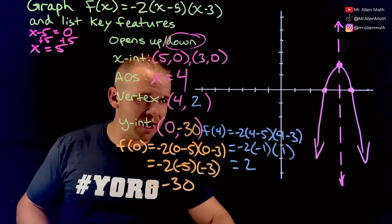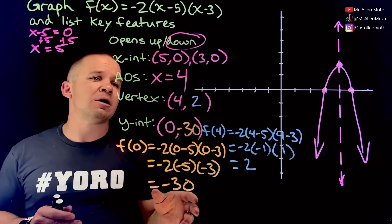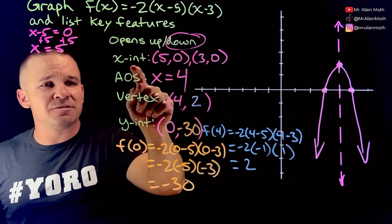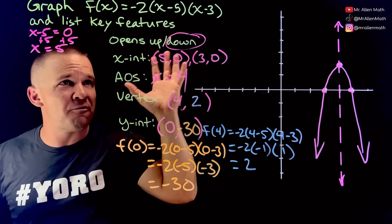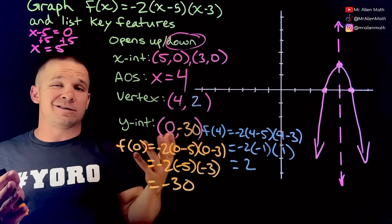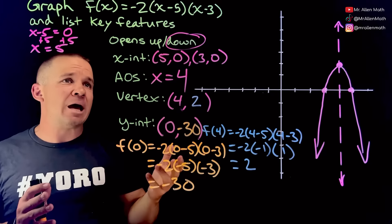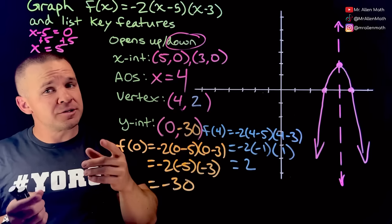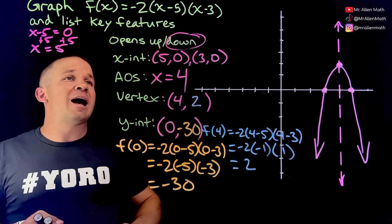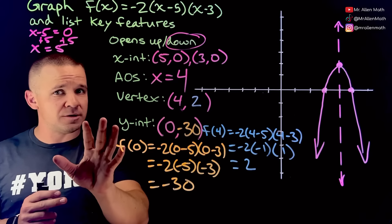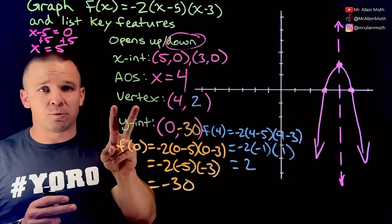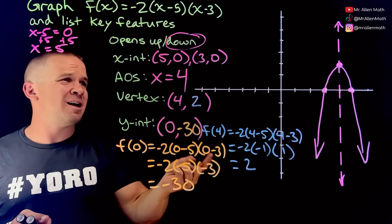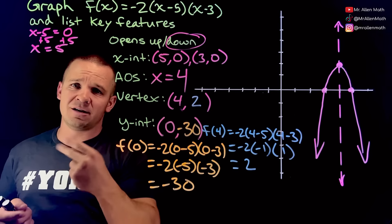We got ourselves a graph from factored form. The x-intercepts are the easiest thing to get there, but the other stuff is also manageable. Hope that helped! I'm also going to do vertex as well as standard form, so if you need help with those two, be clicking on those videos, maybe even hit subscribe, hit like — all the fun YouTube things. See you later.